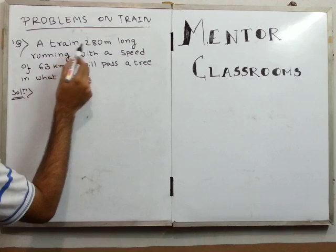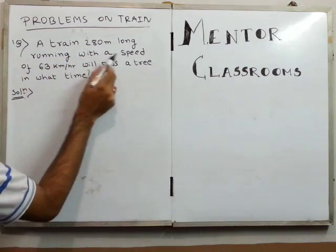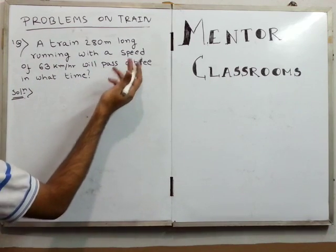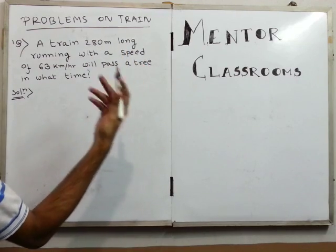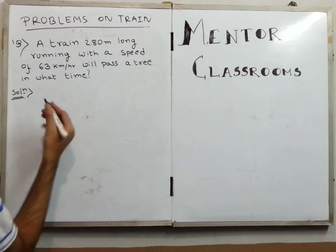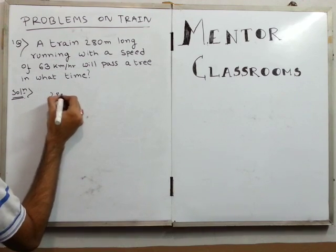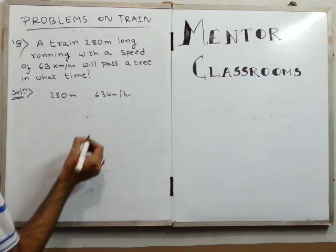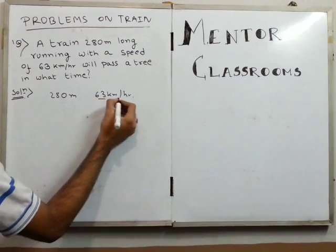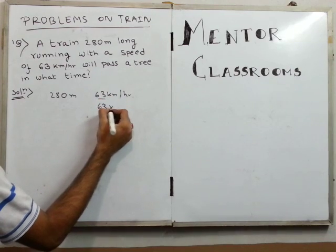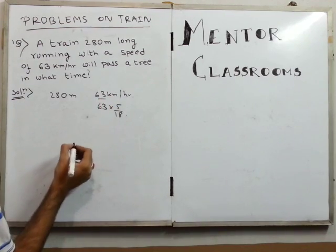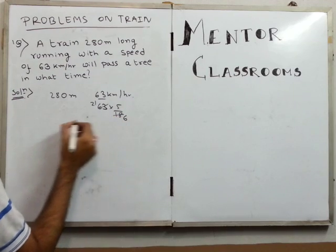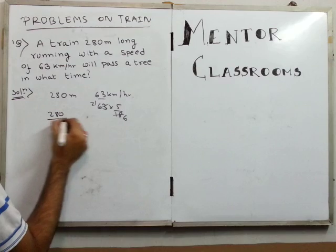Our first problem: a train 280 meters long running at a speed of 63 kilometers per hour will pass a tree in what time? As discussed, when a train passes a tree or any object of negligible length, it crosses its own length. So our distance is 280 meters and our speed is 63 km/h. We convert this to meters per second by multiplying by 5/18.